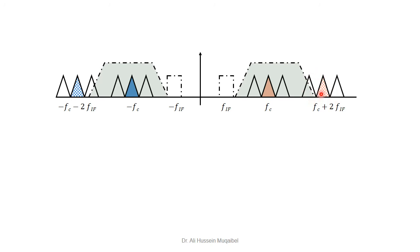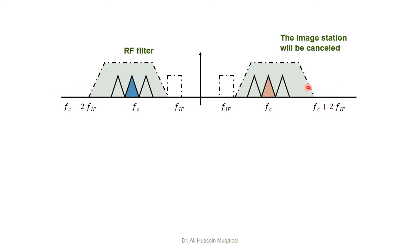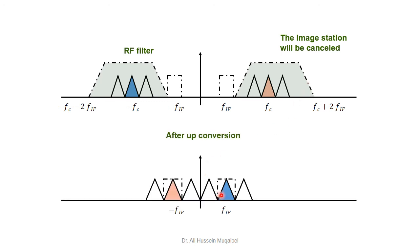So our tunable RF filter does not need to be sharp — its purpose is only to reject the image station, not to select individual channels. Instead of needing a filter that is both tunable and sharp, we have: a tunable but not-sharp filter at RF to remove the image, and a fixed but sharp filter at IF to select the desired channel. This gives us a clean signal free of image interference.